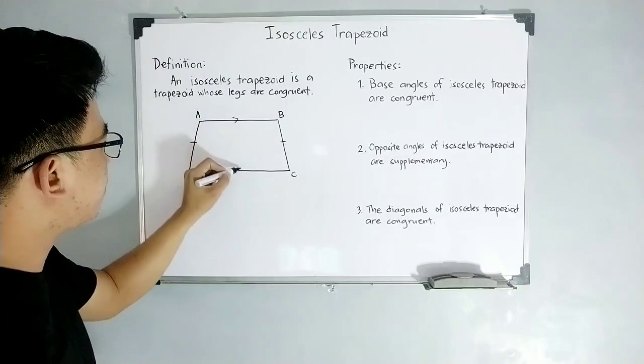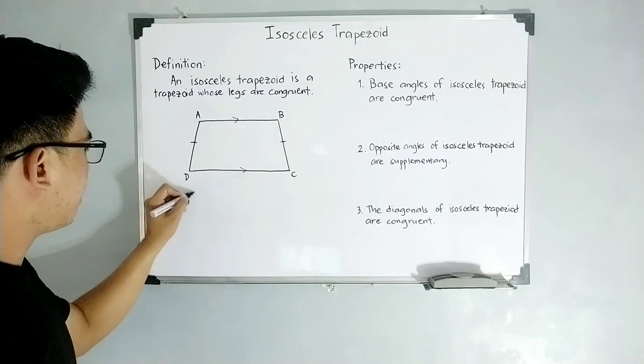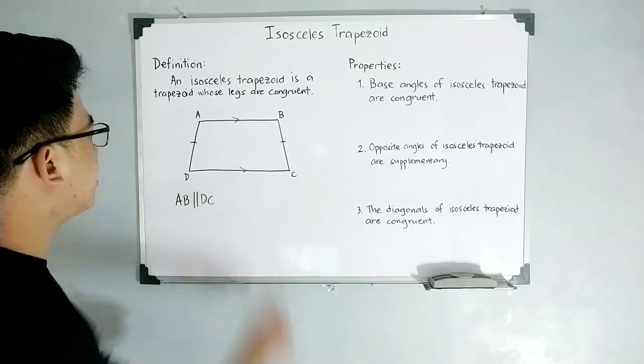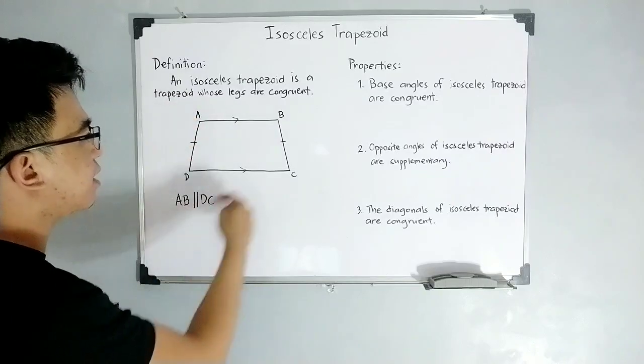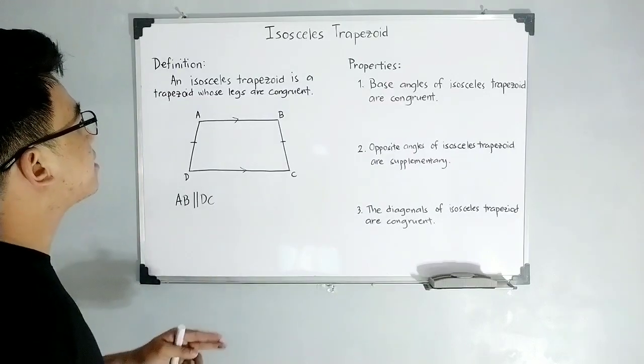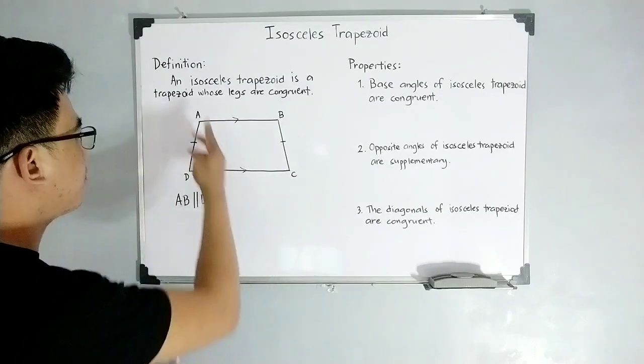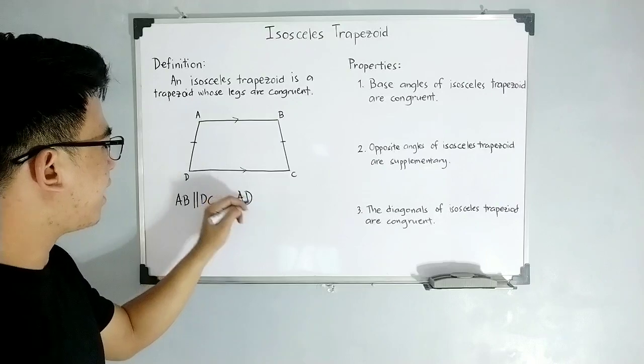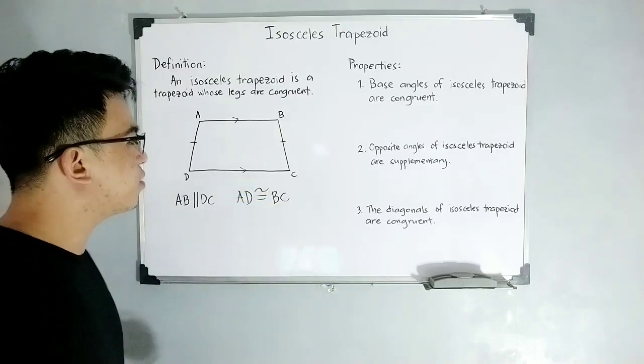Let's say for example, I have here this kind of symbol. It simply means that your AB is parallel to your DC. And your AB is the upper base and this one is the lower base. And this one, your AD, your side AD to your side BC, these are the legs of this trapezoid. And based on our definition, it has two congruent legs. Sir, where are the two congruent legs? Here. You have your AD or leg AD or side AD is congruent to side BC.